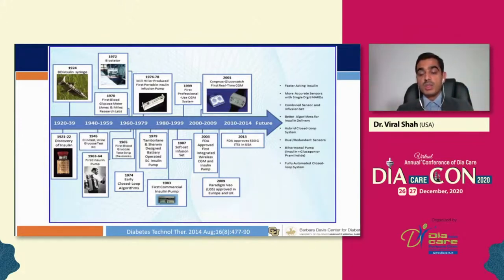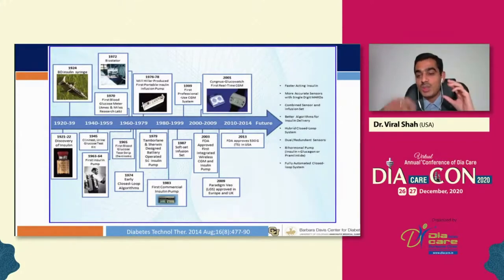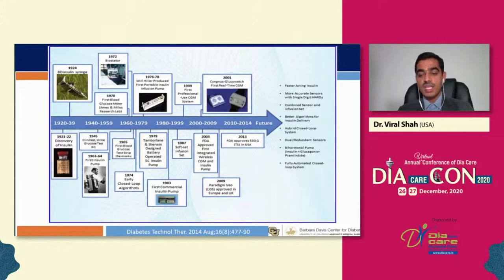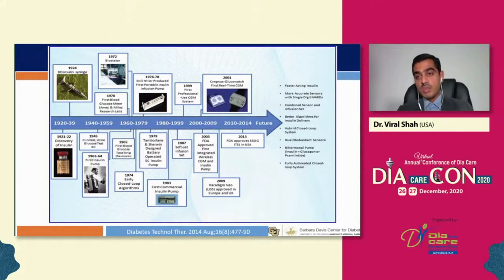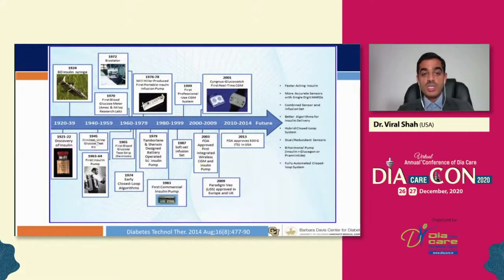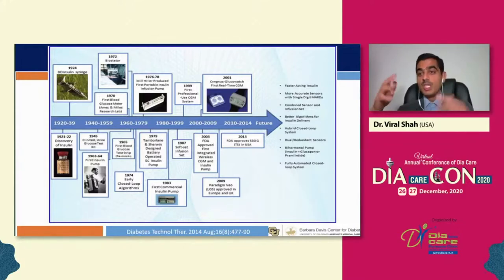Recalling the Benedict test from medical school: you'd take urine in a test tube, add the Benedict reagent, warm it up, and the color change would roughly indicate glucose levels. That was how diabetes was managed for the first 20 years after insulin's discovery. The first urine dip test kit was invented around 1945 — almost 25 years after insulin — simplifying things but still crude by today's standards.